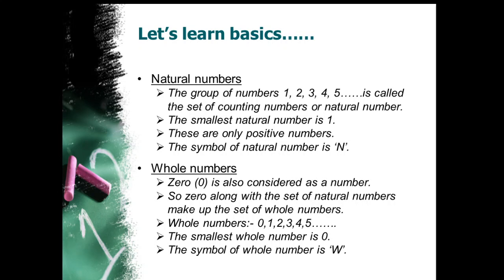The next thing we learned in our previous classes is whole numbers. What is the difference between natural and whole numbers? Whole numbers have one more digit — that is 0 — at the beginning. So 0 is also considered as a number. When we get a set of numbers including 0 along with natural numbers, they are called whole numbers. Example: 0, 1, 2, 3, 4, 5, and so on. The smallest whole number is 0. The symbol of whole number is capital W.